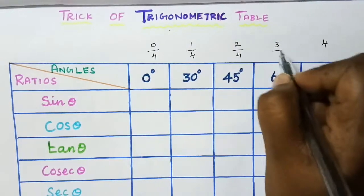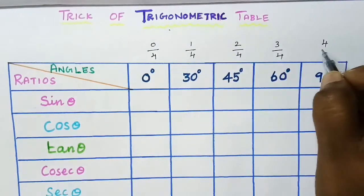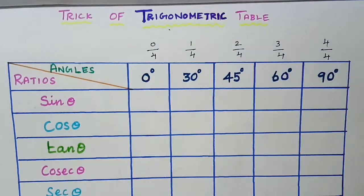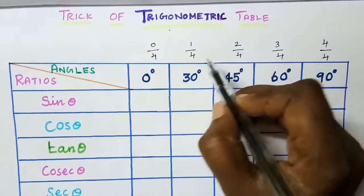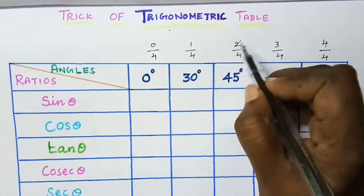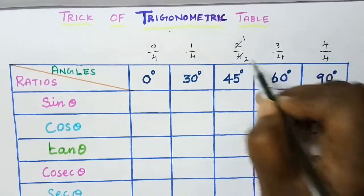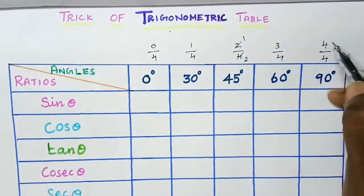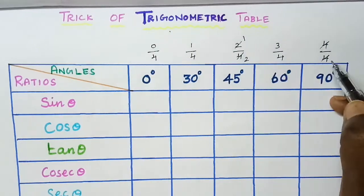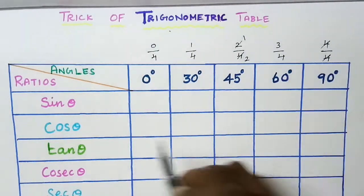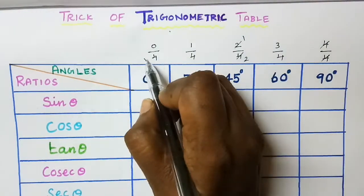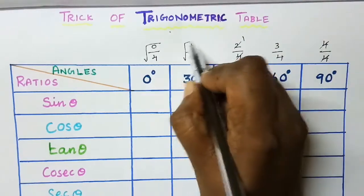So divide all the numbers by 4: 0 by 4, 1 by 4, 2 by 4, 3 by 4, and 4 by 4. Simplify these fractions: 0/4, 1/4, 2/4 simplifies to 1/2, 3/4, and 4/4 simplifies to 1. Now take the square root of all the numbers.